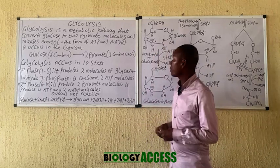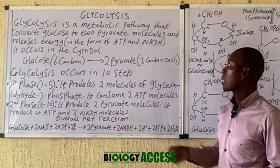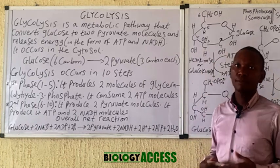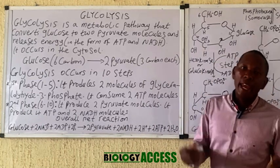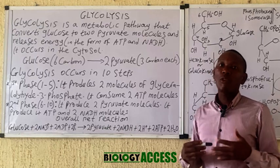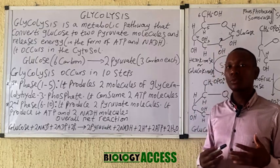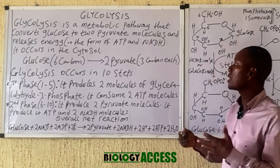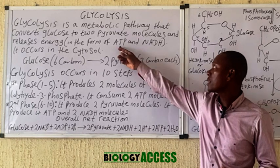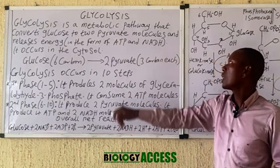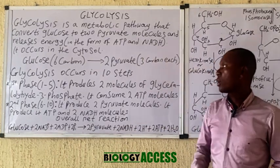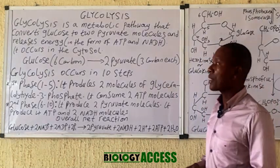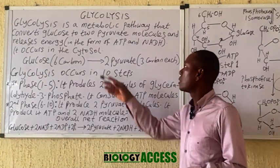Glycolysis is a metabolic reaction where a glucose molecule is converted to a pyruvate molecule. In this process, energy is released, usually in the form of ATP as well as NADH. This process occurs in the cytosol of the cell.